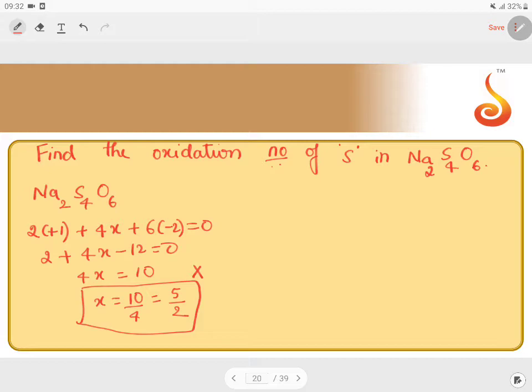Therefore, you need to go for the structure. Simple. There are 4 sulfur atoms, so you write 4 sulfur: 1, 2, 3, 4. Then you need to balance the remaining oxygen.